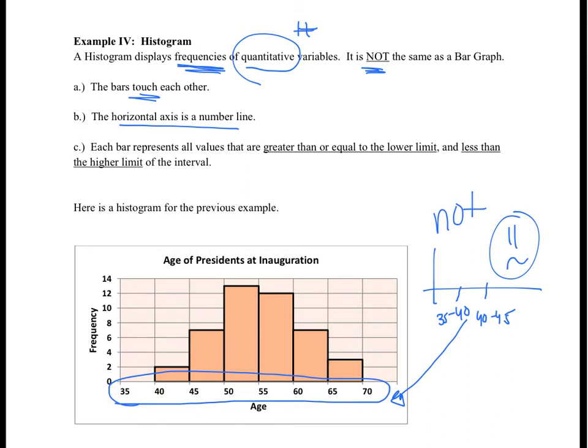Recall that each bar represents values that are greater than or equal to the lower limit and less than the upper limit. Think of it as 40 to 45, where the bracket means it includes 40, and the parenthesis means it does not include 45.